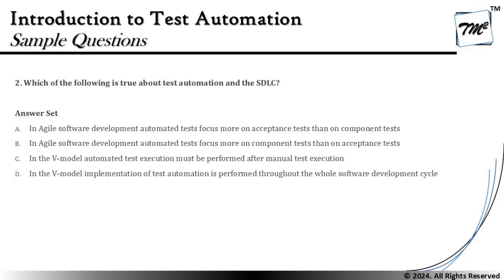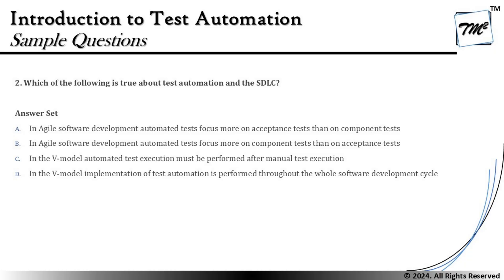Option D says: in the V-model, implementation of test automation is performed throughout the whole software development lifecycle. The whole SDLC may not require automation implementation throughout — initially we focus on test planning, then wait for design and code before implementing test scripts. This description makes more sense for agile, where every sprint we write automation scripts as soon as something is available, rather than for the V-model.